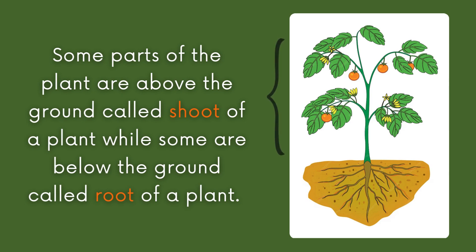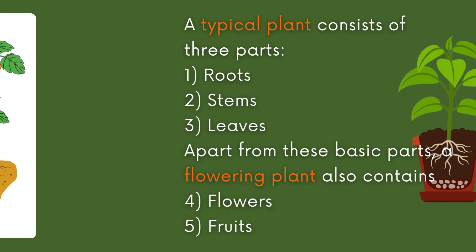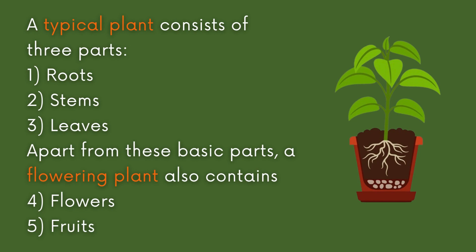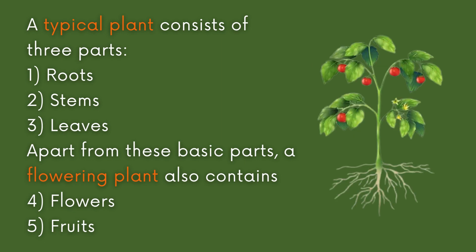Some parts of the plant are above the ground, called the shoot of a plant, while some are below the ground, called the root of a plant. A typical plant consists of three parts: roots, stems, and leaves. Apart from these basic parts, a flowering plant also contains flowers and fruits.